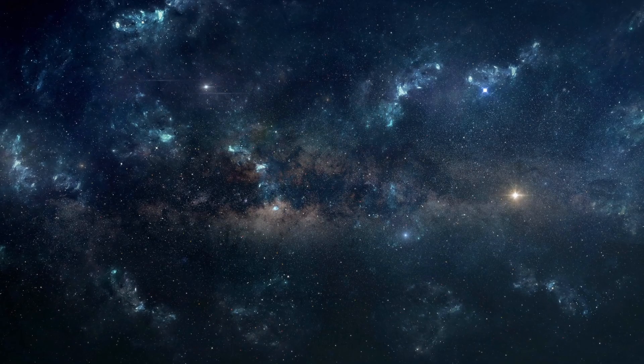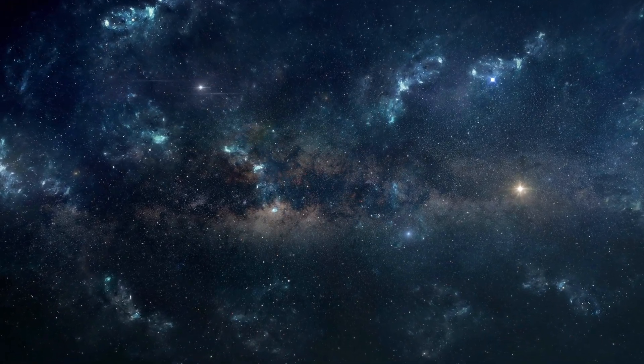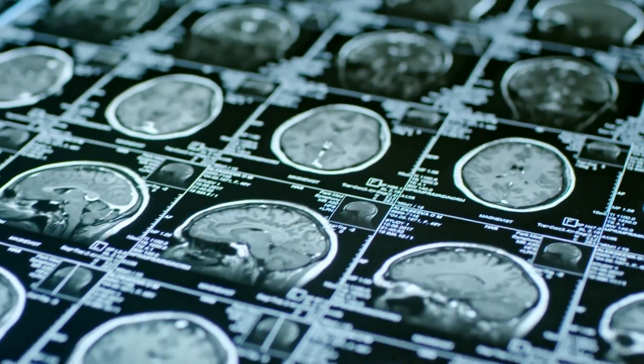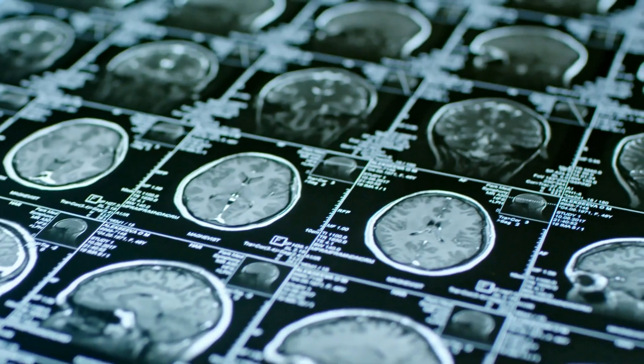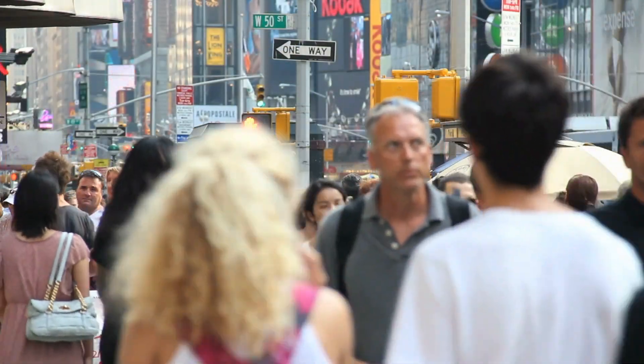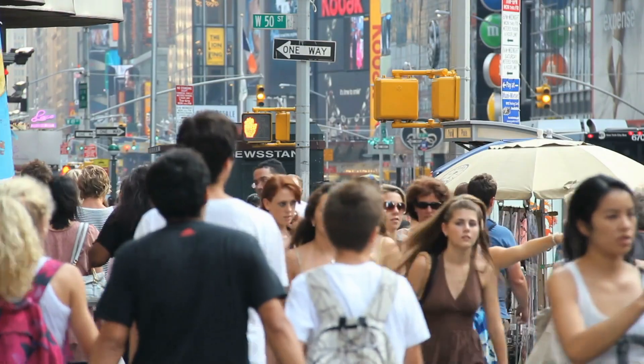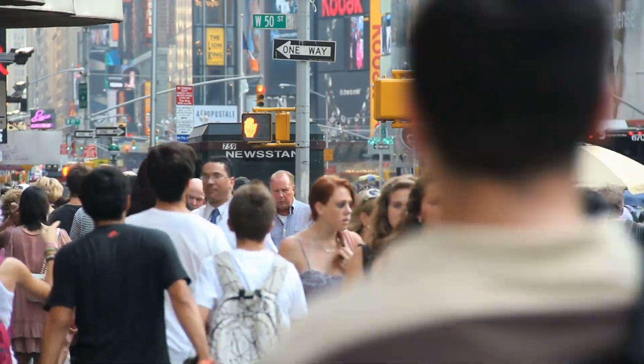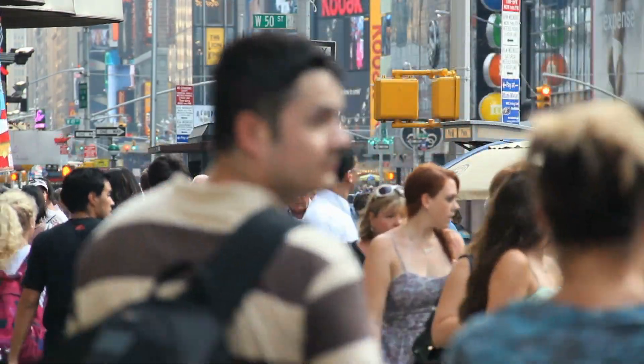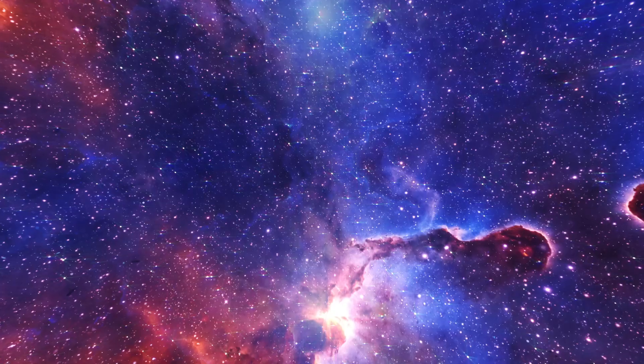Since high entropy is synonymous with high disorder, our brains should be degenerating and slowly breaking down. Yet we humans manage to grow old with a functioning brain, remember things, and gain knowledge throughout our lives. Our brains don't seem to be at equilibrium with the rest of our environment, much like everything else in our universe.